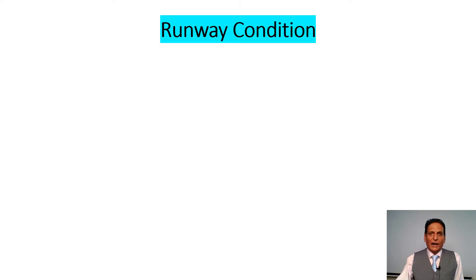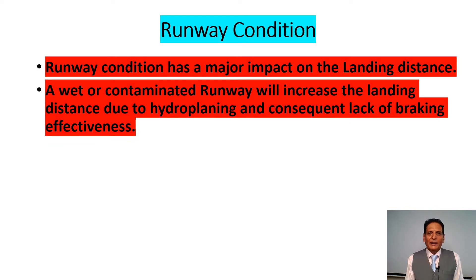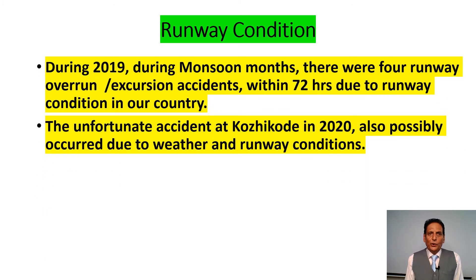Runway condition has a major impact on landing distance. A wet or contaminated runway will increase the landing distance due to hydroplaning and consequent lack of braking effectiveness. During 2019, in the monsoon months, there were four runway overrun or excursion accidents within 72 hours due to runway condition in our country. The unfortunate accident at Kozhikode in 2020 also possibly occurred due to weather and runway conditions.